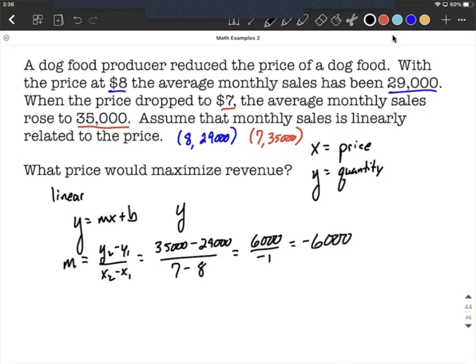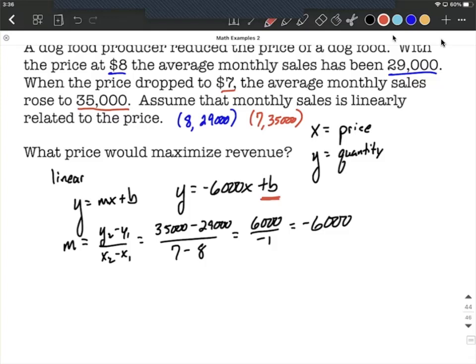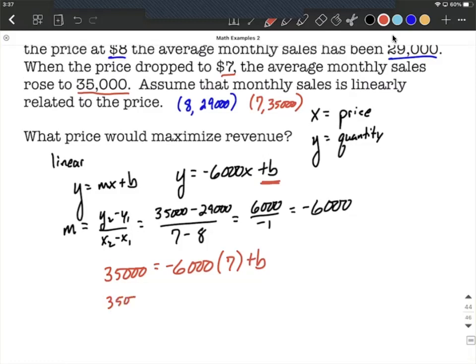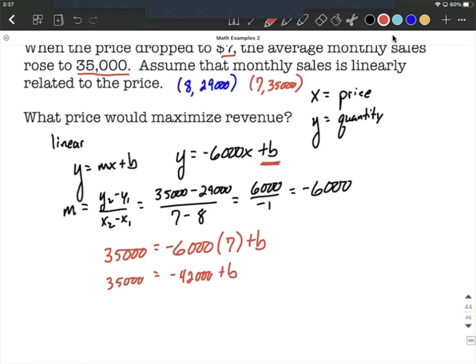As we fill that in, we get y equals negative 6,000 times x plus b. But we don't know what b is yet. So to find that, I'm going to fill in using one of the ordered pairs. I'll use the second ordered pair, 7 comma 35,000. So 35,000 equals negative 6,000 times 7 plus b. This leaves us with 35,000 equals negative 42,000 plus b. Add the 42,000 to the other side and get b equals 77,000.